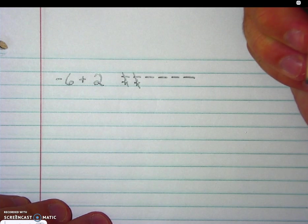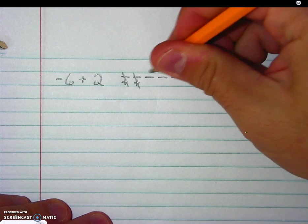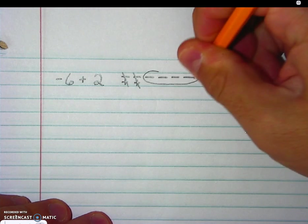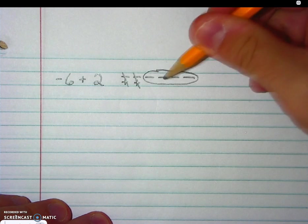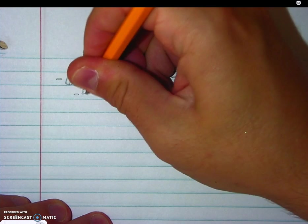Once I mark out my zero pairs, this reveals the answer. Negative 1, 2, 3, 4. My answer is negative 4.